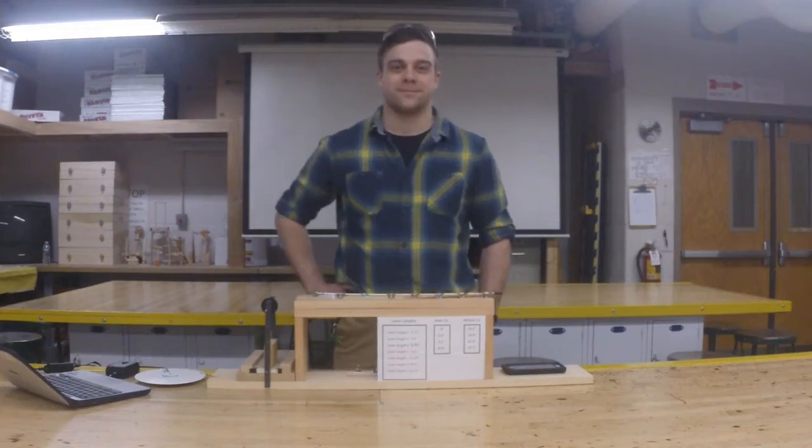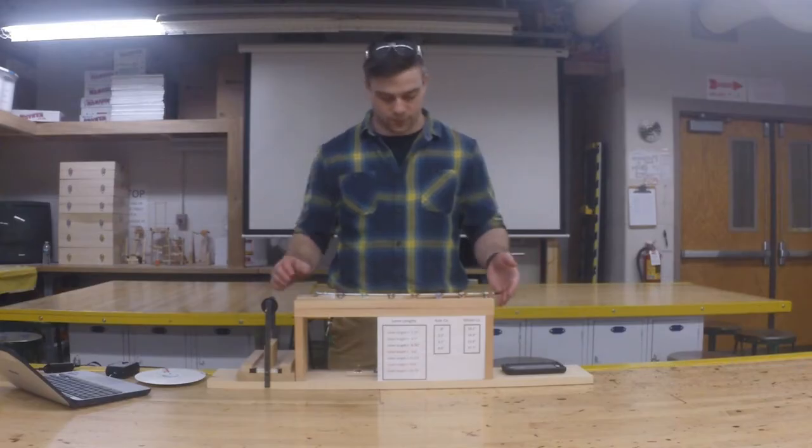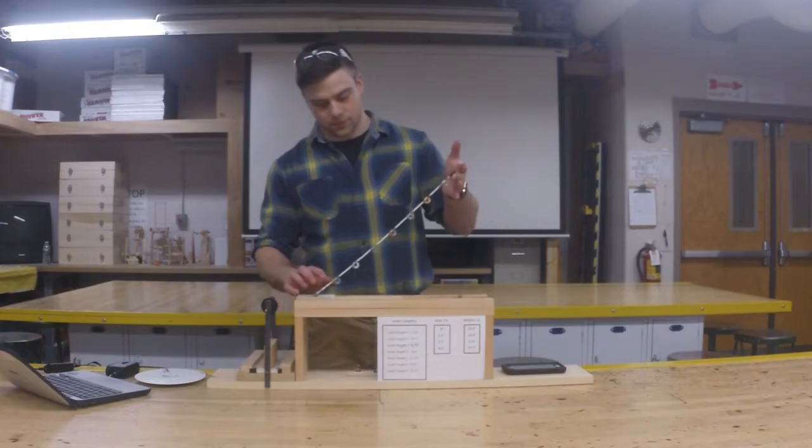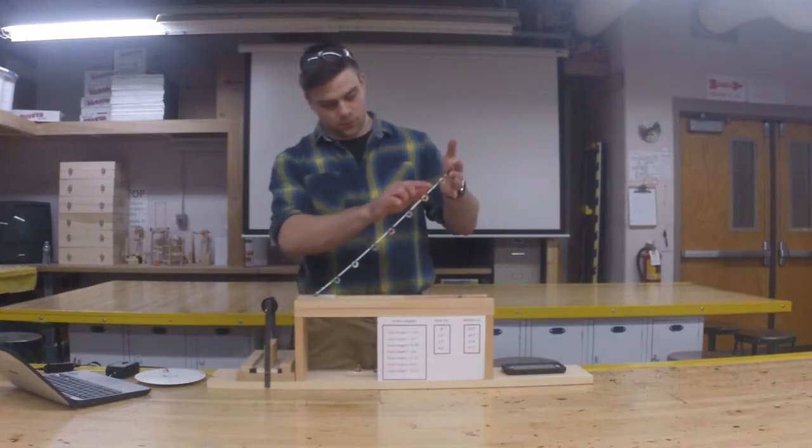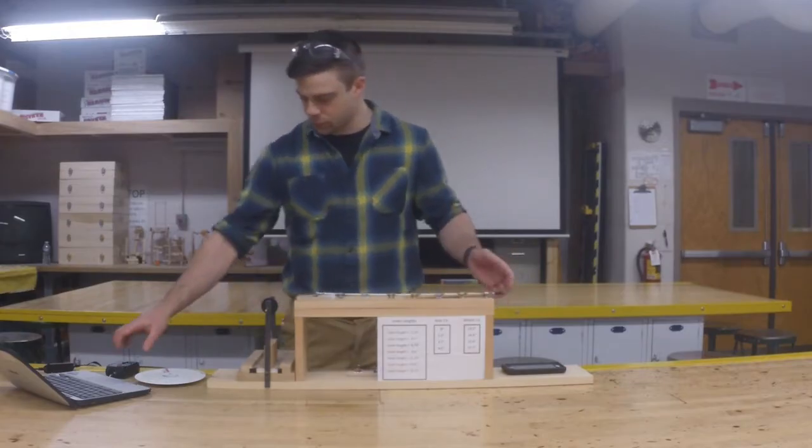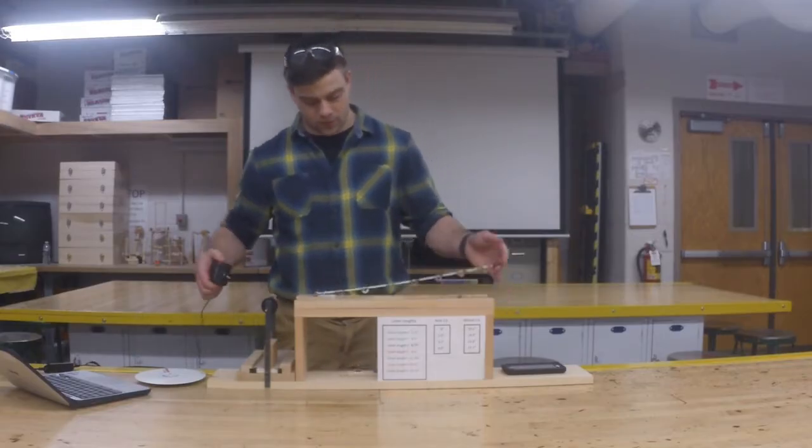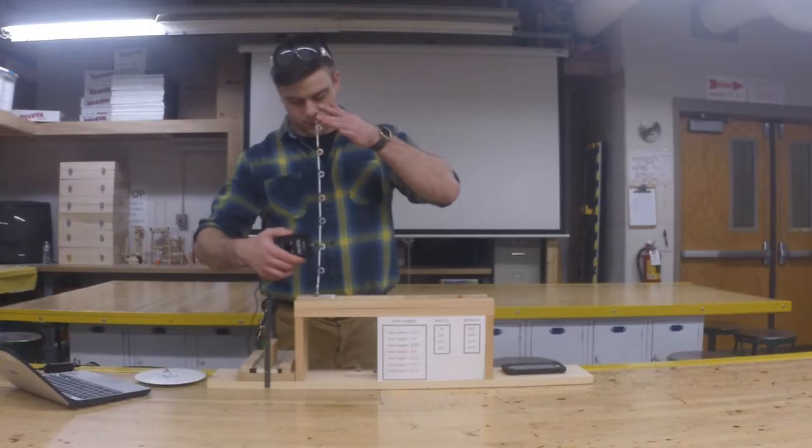This model is going to show us some of the things that we can change on our mousetrap car, and what effect it will have on the car's performance. One factor to think about is the length of the lever arm. There are certain advantages to having an arm that's longer or shorter. I'm going to use a digital force sensor to measure how hard the lever arm will pull the string at each of these lengths.